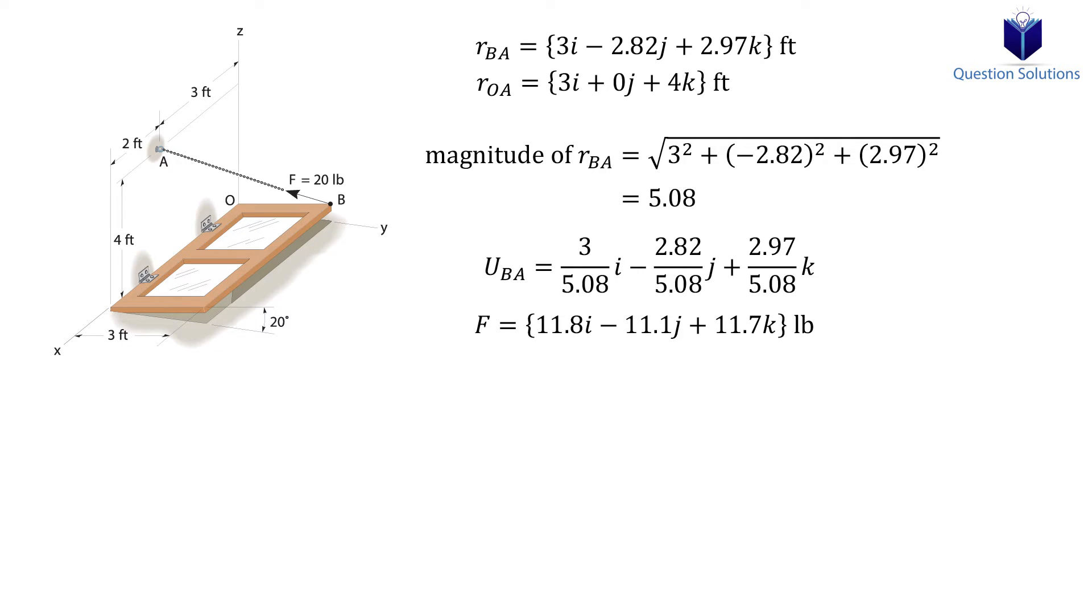Now the question is asking for the moment along the x-axis, and the x-axis can be represented as a unit vector like this. Now we can figure out the magnitude of the moment along the x-axis. And yes, we do have to take the cross product of the position vector from the origin to A and the force we found.